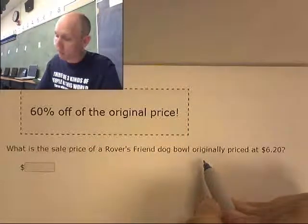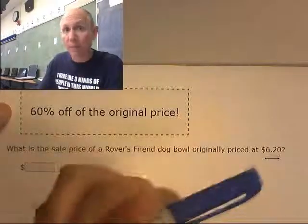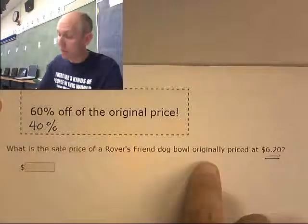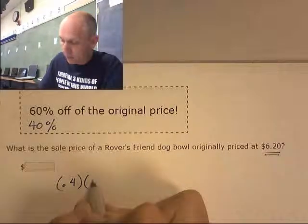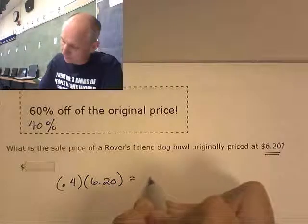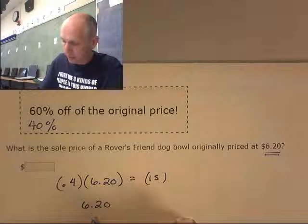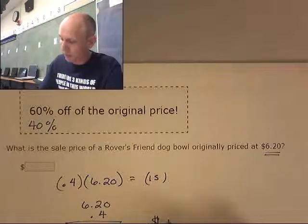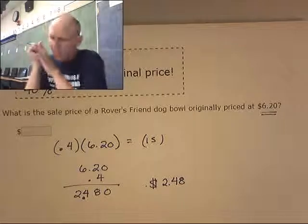What is the sale price of Rover's Friend dog bowl, originally priced at $6.20, with 60% off? If they take 60% off, how much am I still paying? I'm still paying 40%. It's not asking how much they're taking off — it's asking how much am I going to pay at the end. So 40%, or 0.4, times $6.20 equals the new price. That works out to $2.48, which seems reasonable — it should be less than the original.